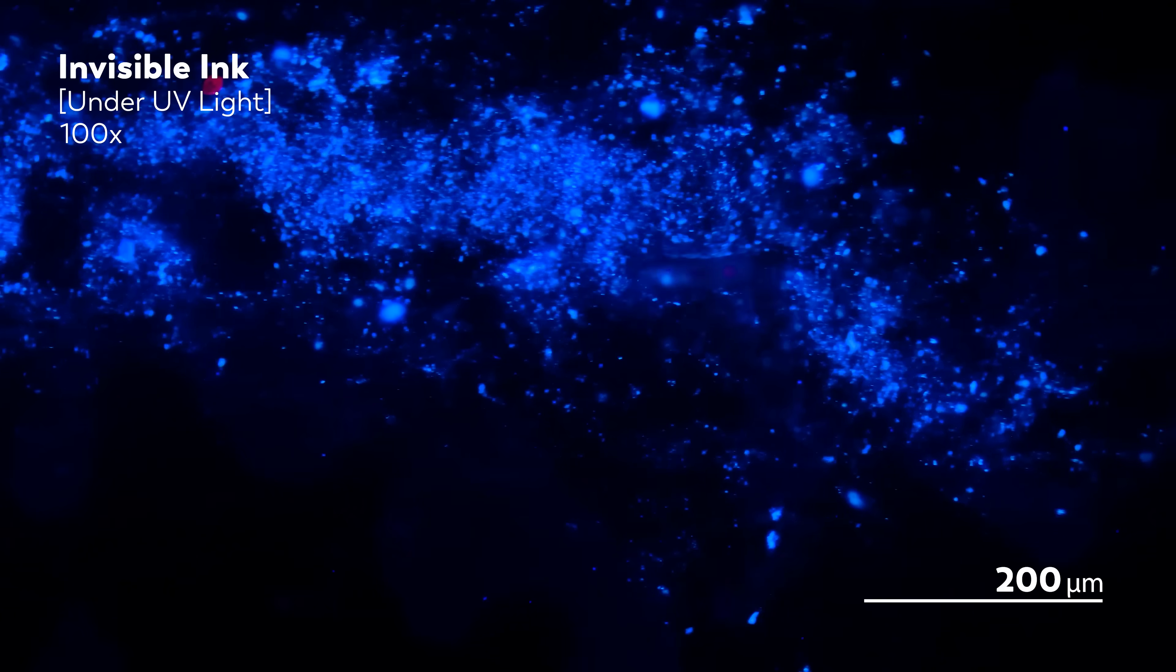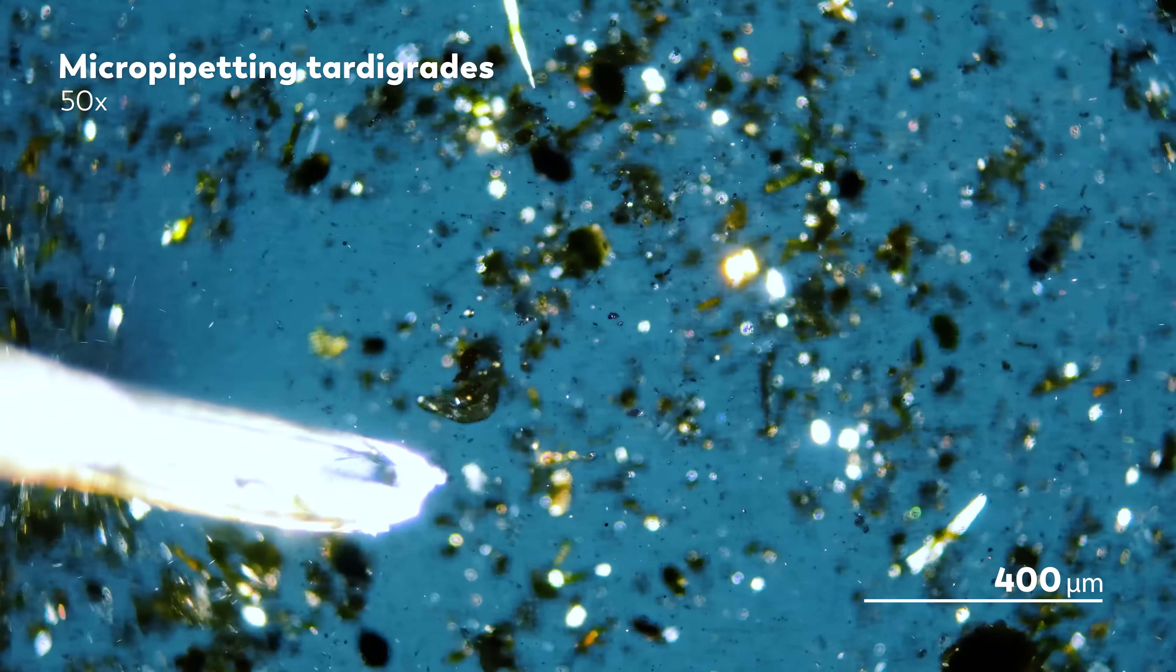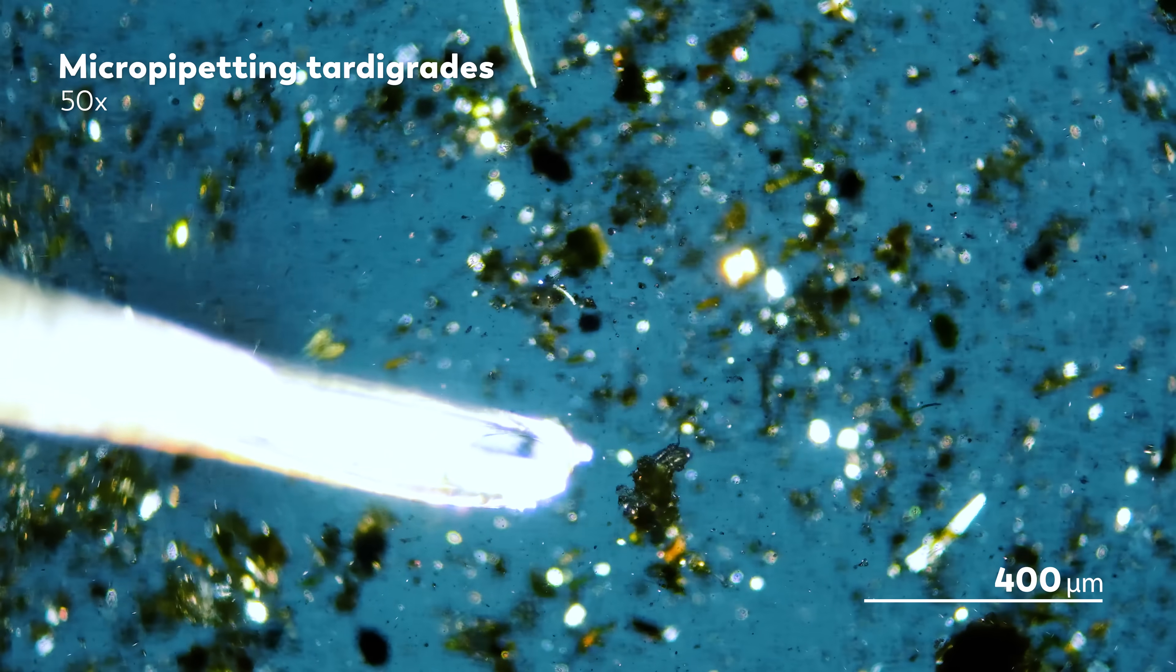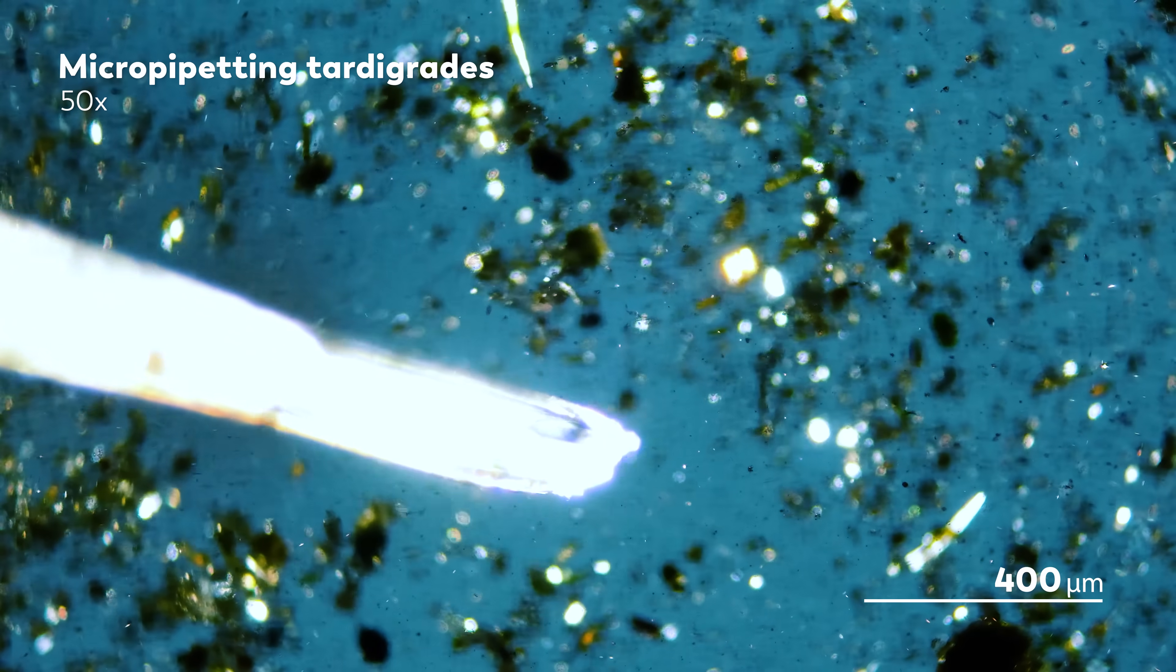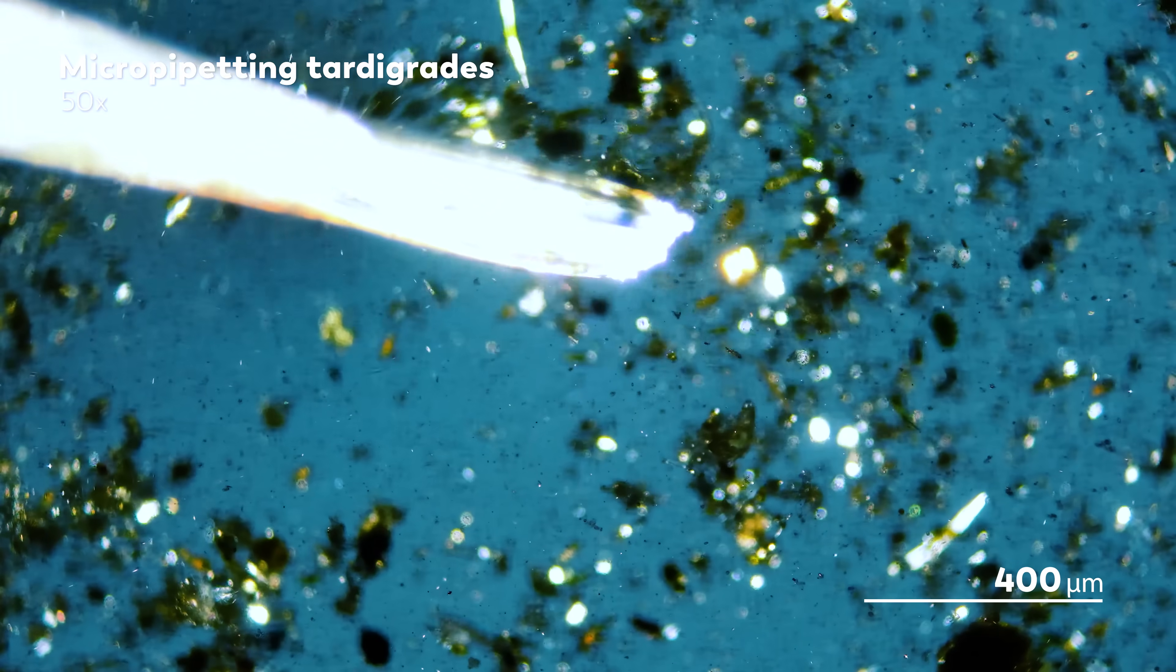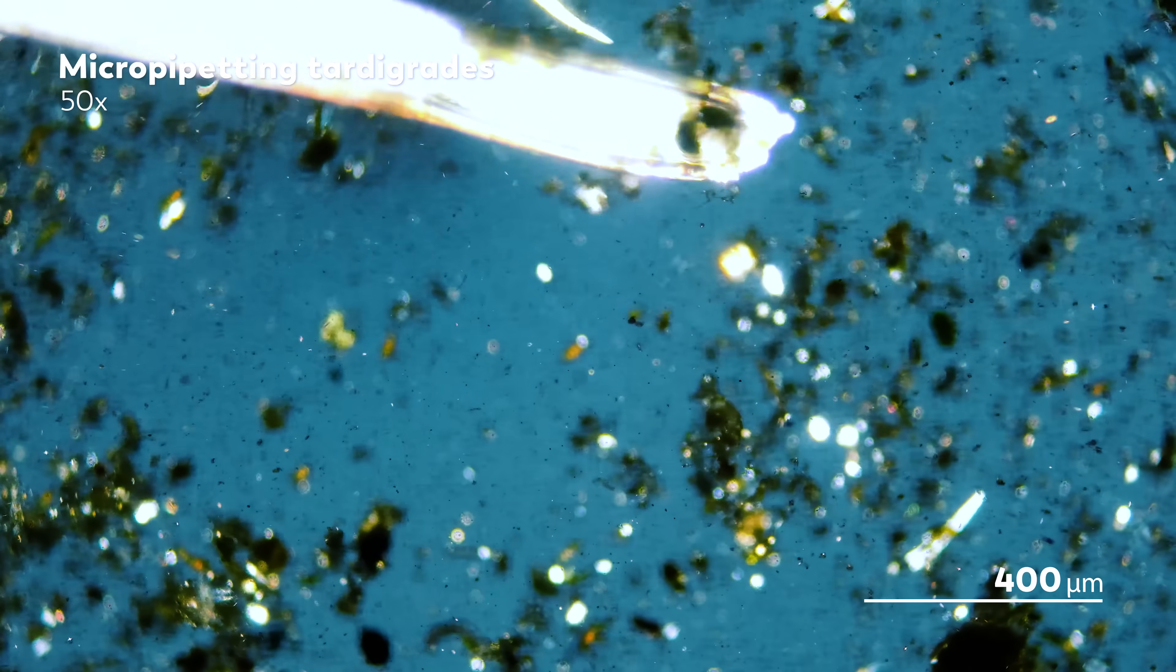But sometimes, his experiments are much more practical. For example, when he started microscopy, all of the books and papers that he came across described a very important skill for microscopy called micropipetting. This technique helps you grab just a tiny bit of a sample from your slide, the way that James is grabbing a single tardigrade here.